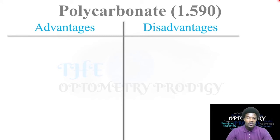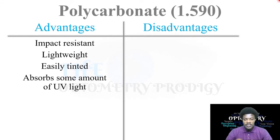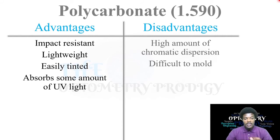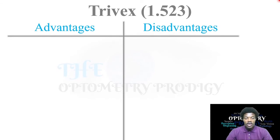Polycarbonate has a refractive index of 1.590. The advantages are: impact resistant, lightweight, easily tinted, and absorbs some UV light. The disadvantages are: it has a high amount of chromatic dispersion, and it is difficult to mould. The high chromatic dispersion means the Abbe value for polycarbonate will be low.